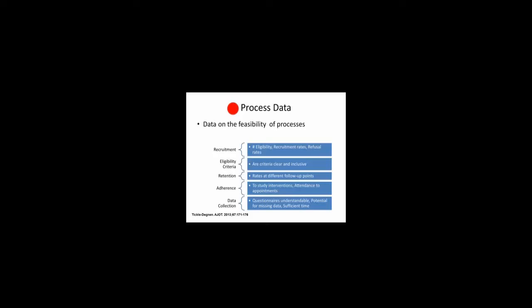Missing data is a bane to our existence and we need to make sure we can prevent people from dropping out and not remaining in the study. We want to ensure that data collection is easy, that questionnaires and surveys are understandable, with limited potential for missing data, and that we have checks and balances in place. This information is important not only for designing a reasonable project, but also to demonstrate that you are capable of doing all the steps required in a larger study.